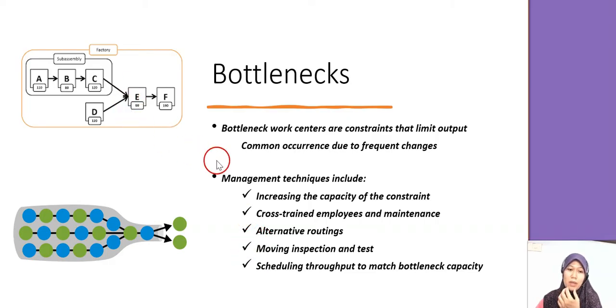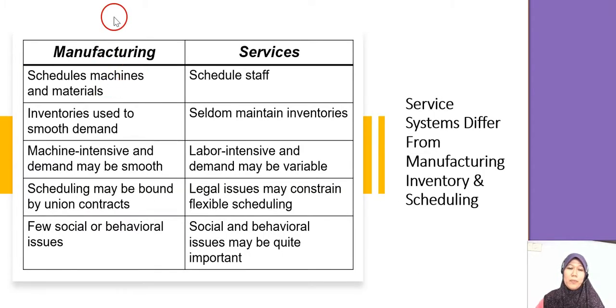Maybe you have alternative routes, you have another machine, another line to compensate the queue. And for manufacturing and service, it's different in doing scheduling. We know that in service, we only deal with staff, and seldom is there inventory in service. But in manufacturing, yes, it's very important in which it's involved with the machine, material, manpower. And for services, they have different kinds of issues during the scheduling.